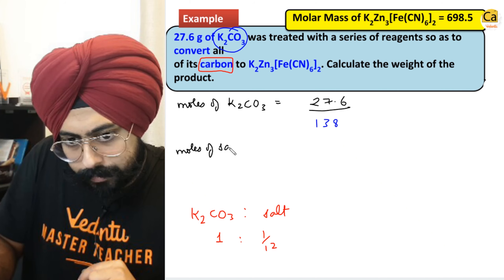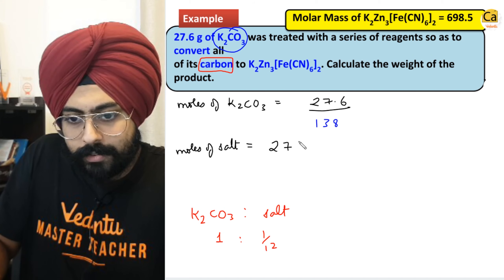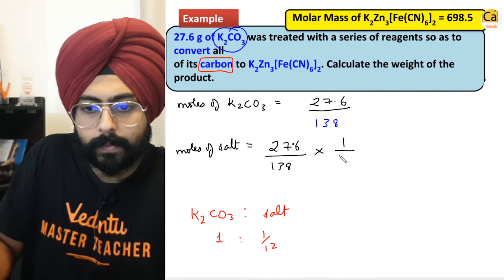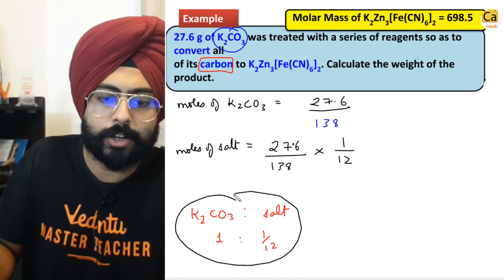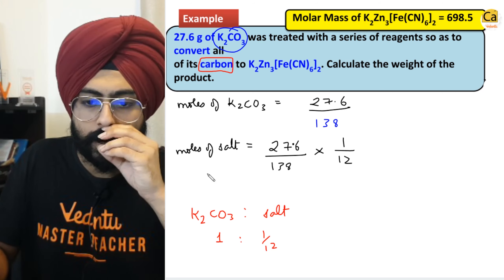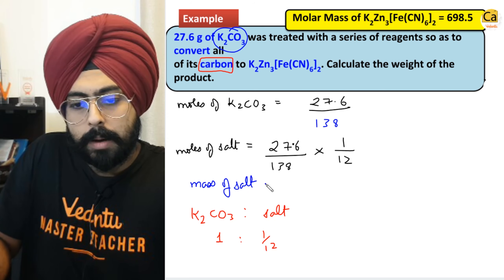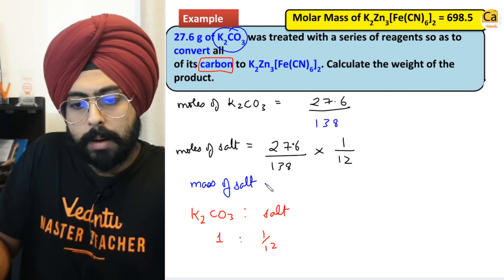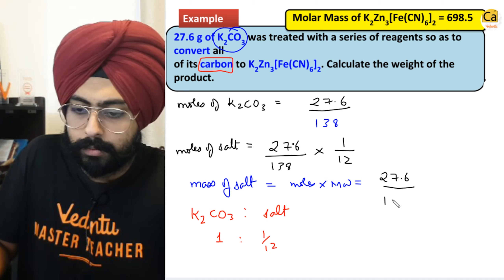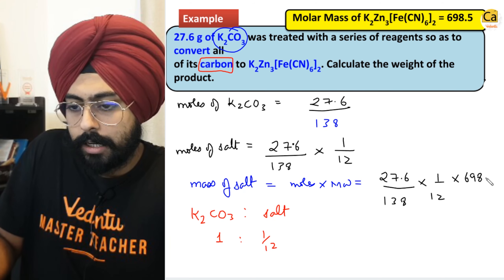Moles of salt will be 27.6 divided by 138, divided by 12, because of the ratio — 1 K2CO3 is giving rise to 1/12 of the salt. Mass of the salt equals moles × molecular weight, which is 27.6 ÷ 138 × (1/12) × 698.5.